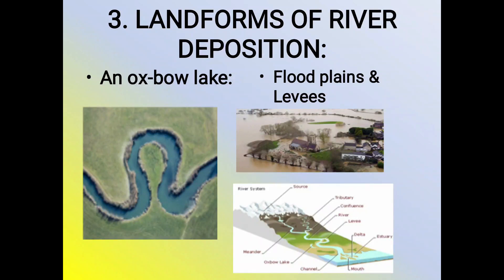During the flood, the capacity of the river to carry load increases due to the increased volume of water. The finer particles are carried over longer distances, but the larger fragments are deposited along the banks of the river as the flood water is unable to carry them further. Thus, natural embankments come into existence along the banks of the river. Along the lower course of the Mississippi, they are known as levees. They are mainly made up of coarse material.